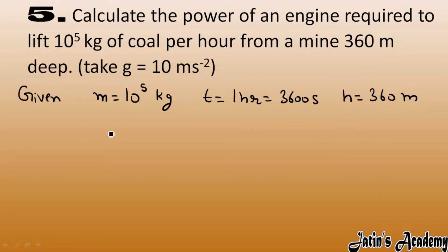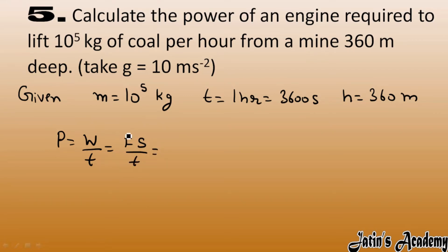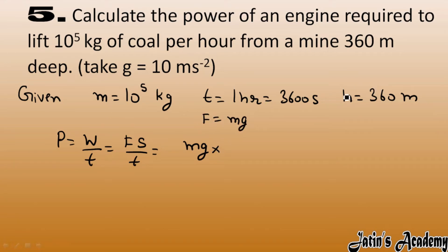Power equals work done per unit time. Work done equals force into displacement over time. Here, force is not directly given, but since mass and g are given, force equals m × g. Displacement in this case is the height h.